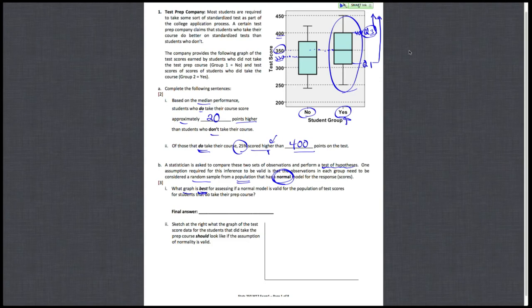What graph would be best made to check on the normality condition for a population of scores? We've had a couple of graphs that we can look at to check to see if a normal model is reasonable, but the best one, the one that's a little more definitive for us, has been the QQ plot.